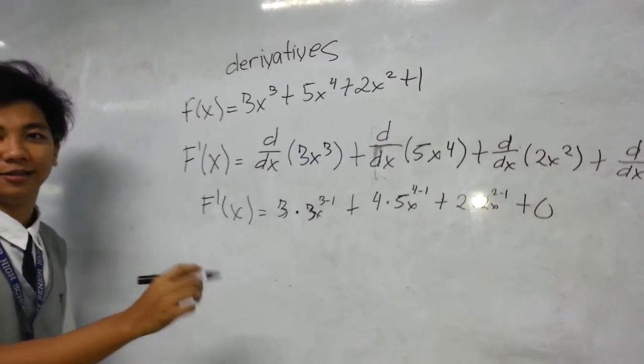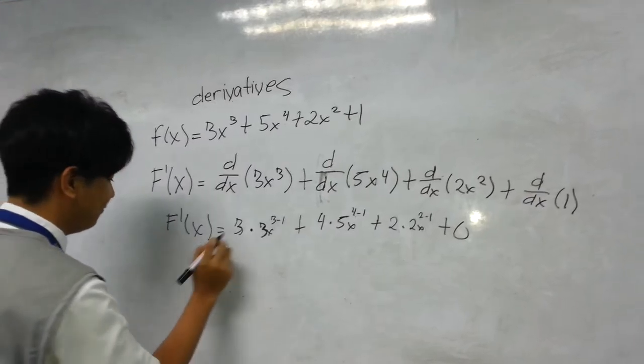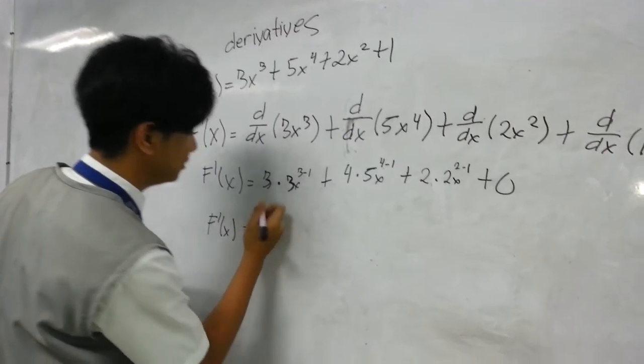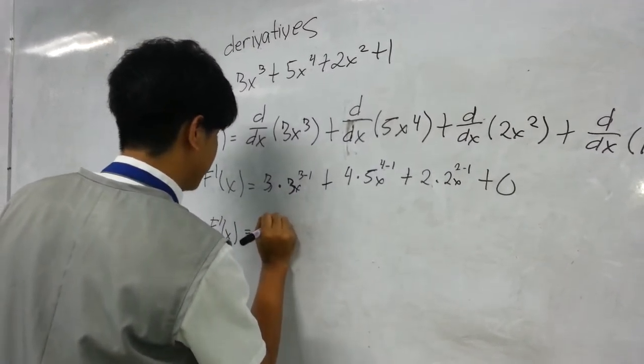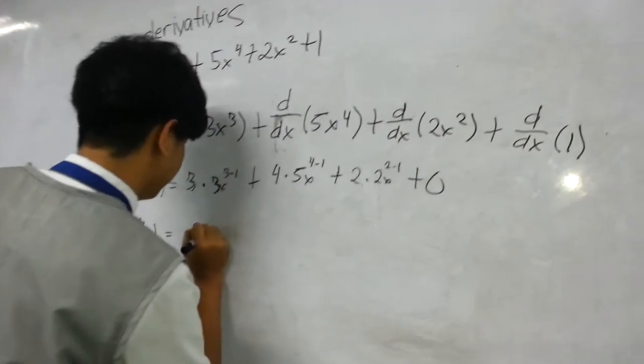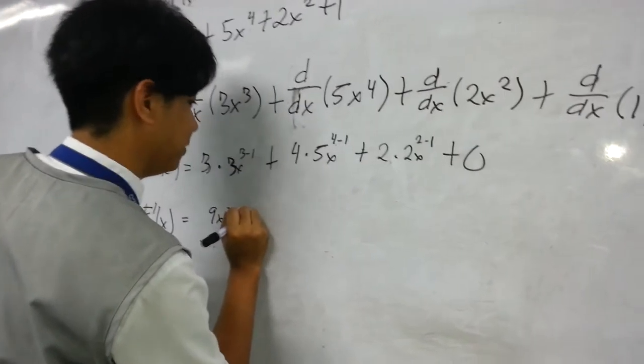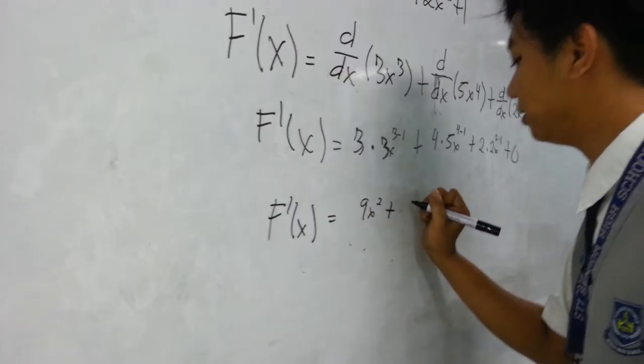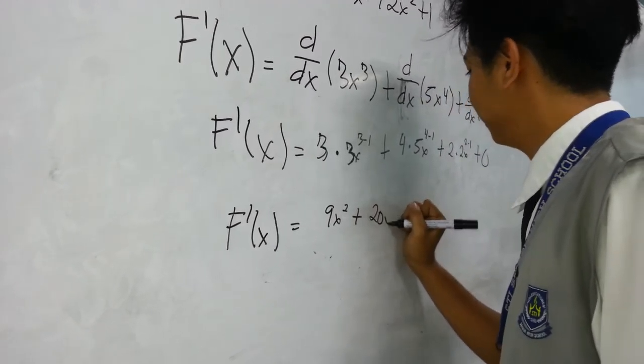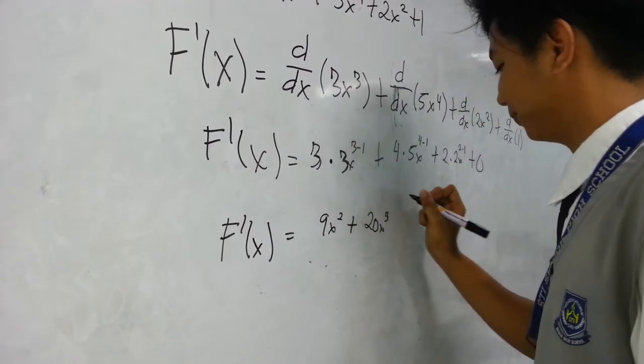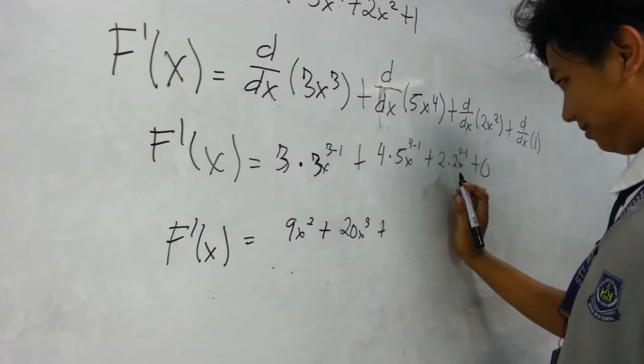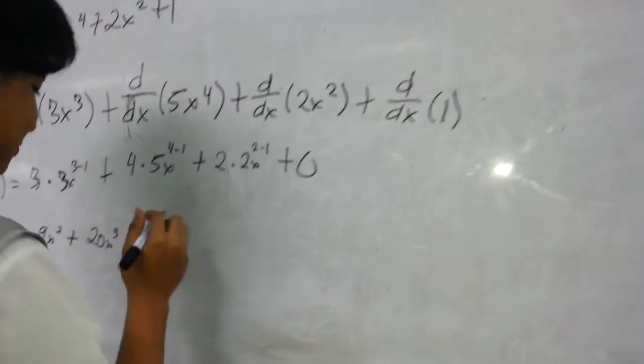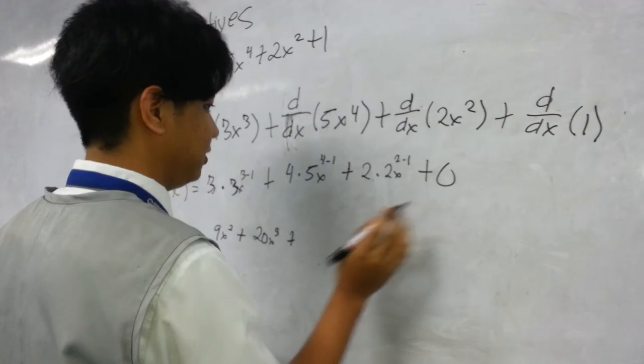And then you're going to simplify it. F prime of x equals 3 times 3 is 9x squared, plus 4 times 5 is 20x cubed, plus 2 times 2 is 4.